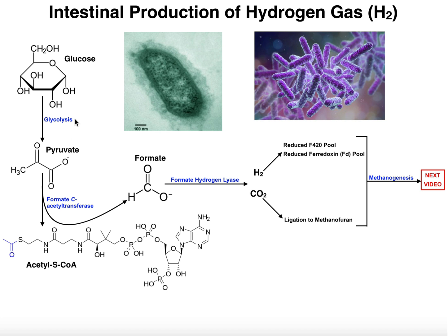The first step is a long process — it's actually 10 enzymes — but it's glycolysis. Hopefully we know at this point that glucose, once it's imported into a cell, can be converted by glycolysis into molecules of pyruvate. In fact, two pyruvate molecules per molecule of glucose.